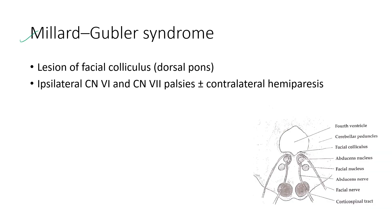Next is Millard-Gubler syndrome. It is a lesion of the facial colliculus in the dorsal pons. It is characterized by ipsilateral cranial nerve 6 and cranial nerve 7 palsies, with or without contralateral hemiparesis.